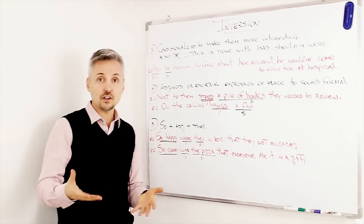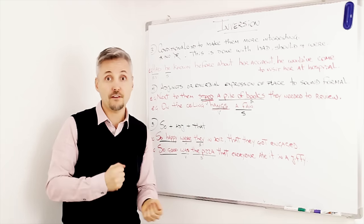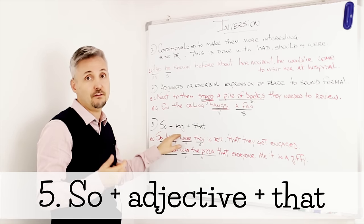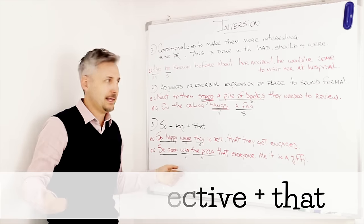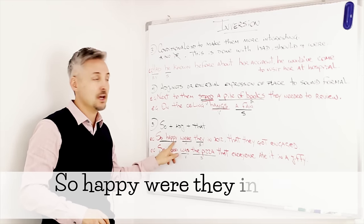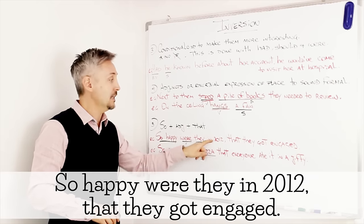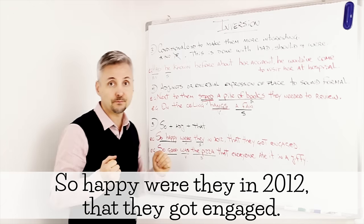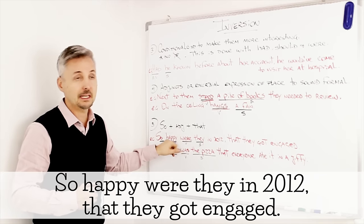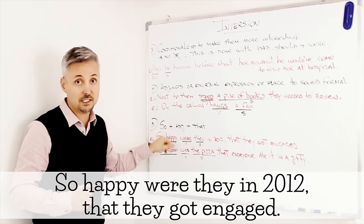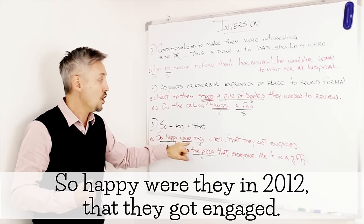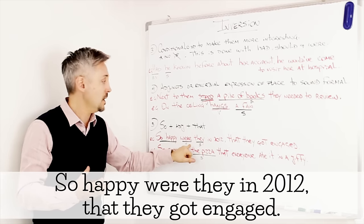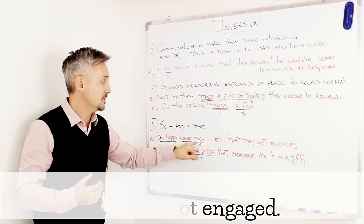Okay, and the final inversion, or situation where we can find inversion, is with so plus adjective plus that. Like in my example. So happy were they, in 2012, that they got engaged. You can see right here, so happy, is the so plus adjective, happy. Were, is the auxiliary verb. Okay, in this case is a full verb. And then the subject, they.